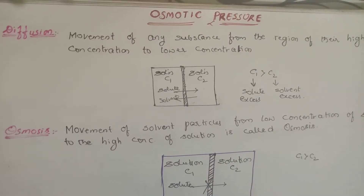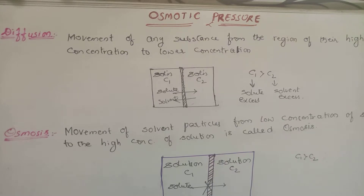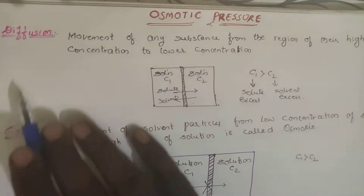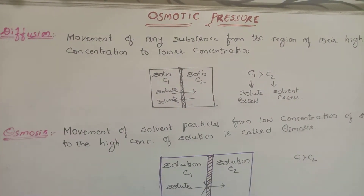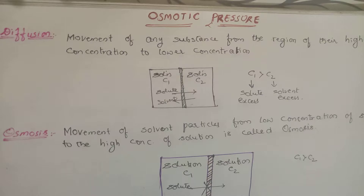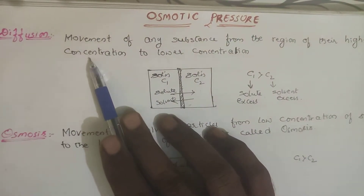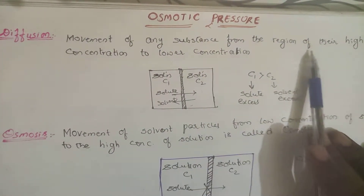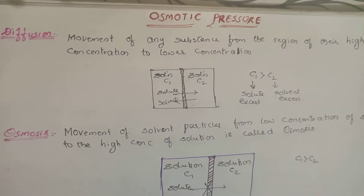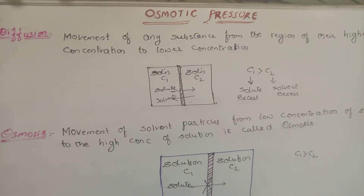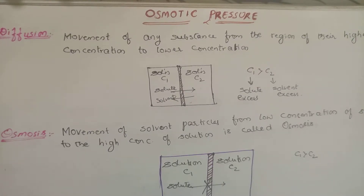Good morning students. In this lecture we are going to deal with osmotic pressure. Before going into osmotic pressure, let us differentiate two terms: diffusion and osmosis. You have already learned diffusion at the standard level with respect to gases. Diffusion is the movement of any substance from a region of higher concentration to lower concentration — particles move from where their availability is high to where it is low.